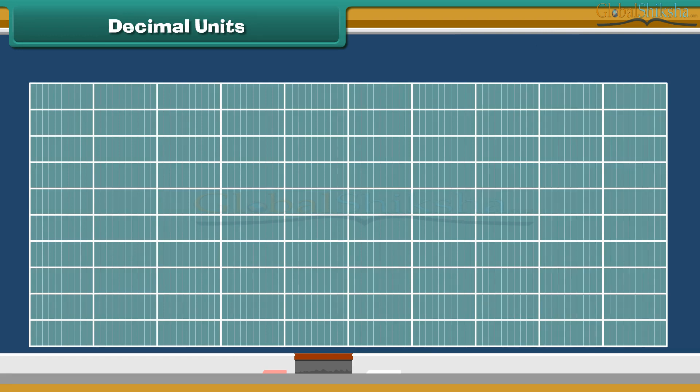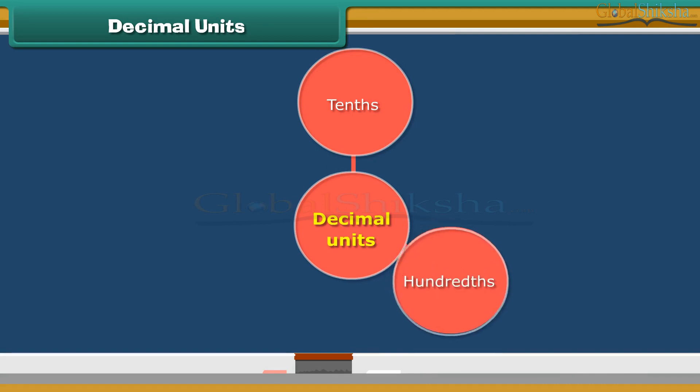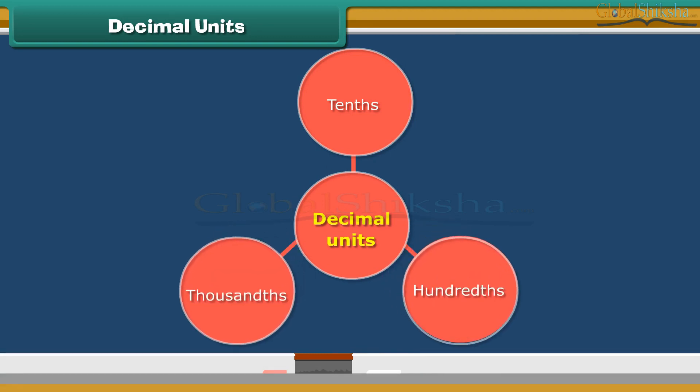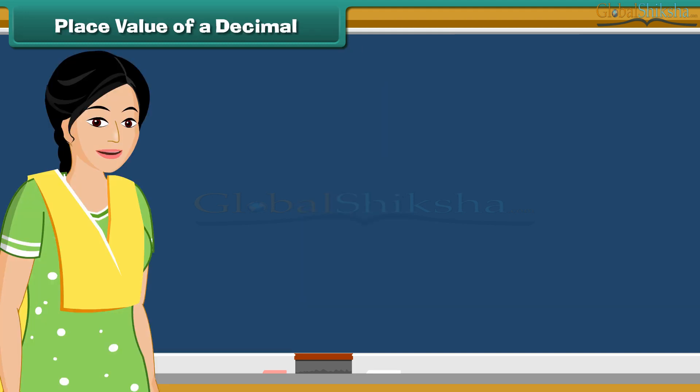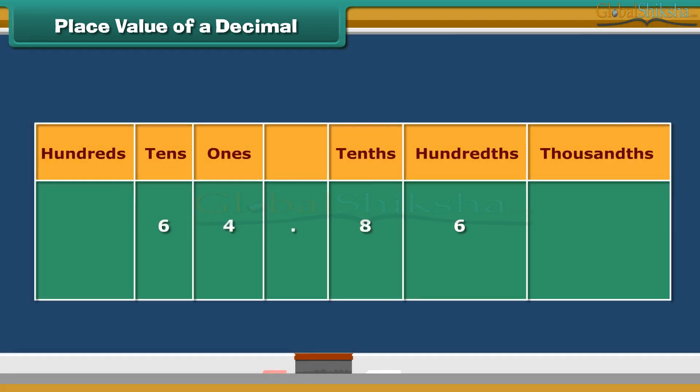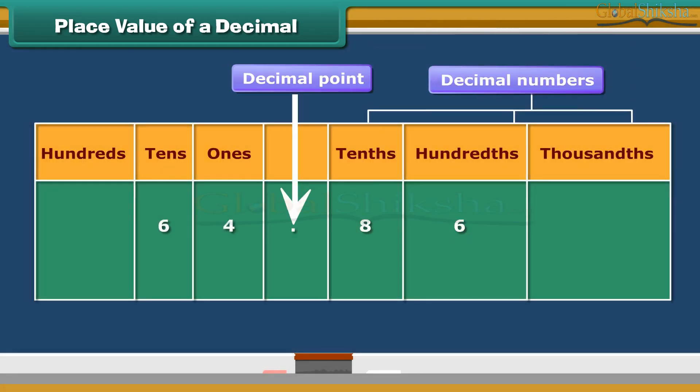So, the fractions tenths, hundredths, thousandths are called decimal units. Well, writing the decimals is pretty easy. Numbers to the right of the decimal point are decimals. The place values are tenths, hundredths, thousandths and so on.